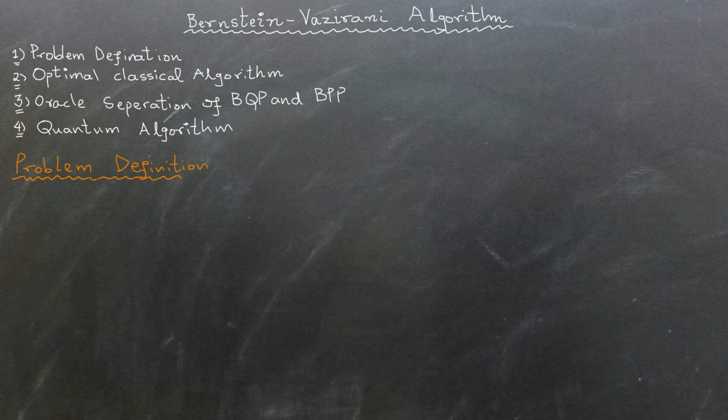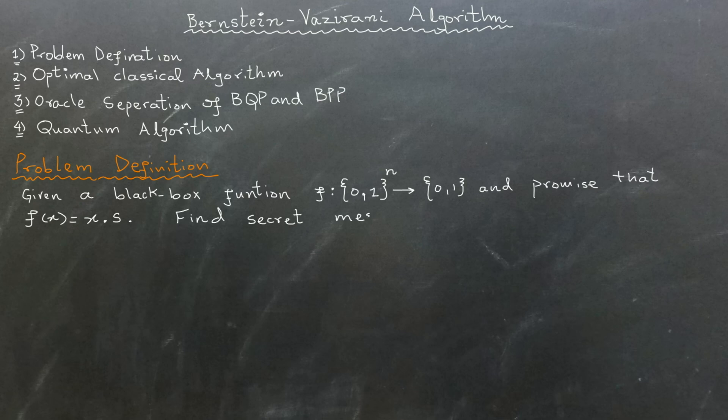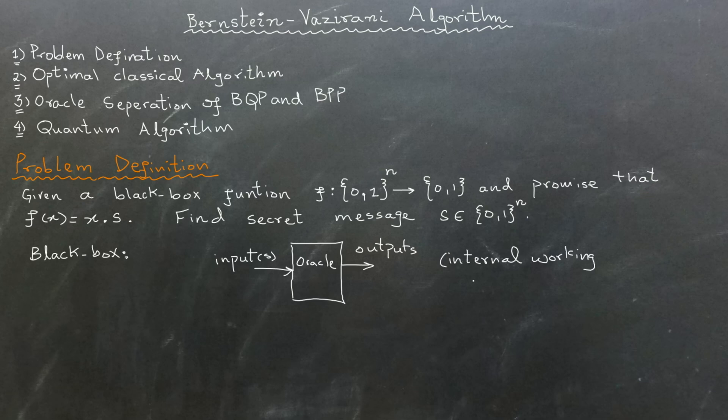Problem Definition: Given a black box function that takes n bit inputs and produces 1-bit outputs, you are promised that the function is defined as f of x equals x dot s. Your task is to find the secret n-bit string s. The black box function implies that we cannot see the internal working of the function. Instead, we are given an oracle to send different inputs to the function and receive corresponding outputs.